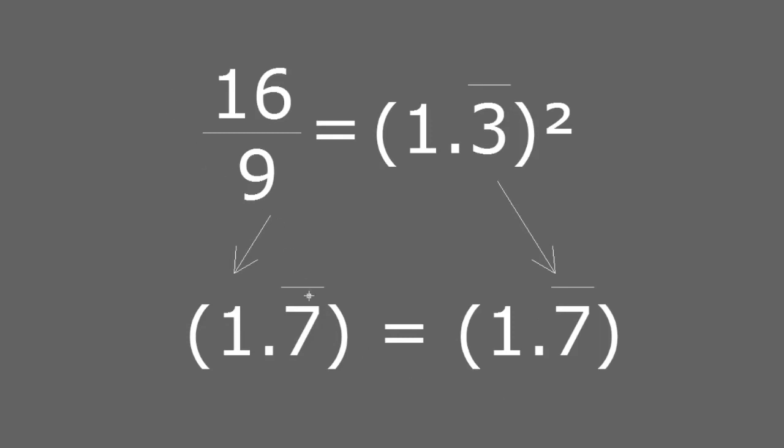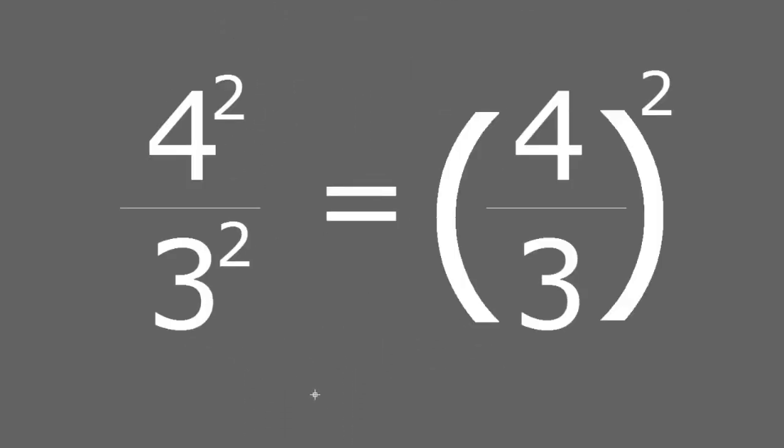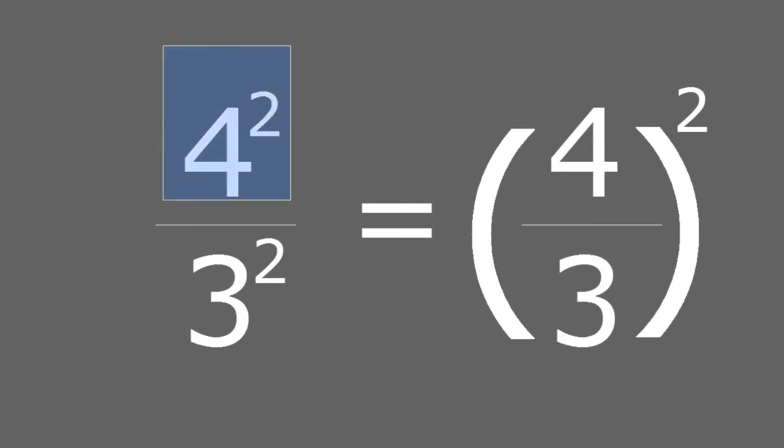So, we see that on both sides of the equation, we get the same results. You can first square the 4 and divide it by 3 squared. That result will be the exact same result as if you first divide 4 over 3, and the result of 4 over 3 is then squared.